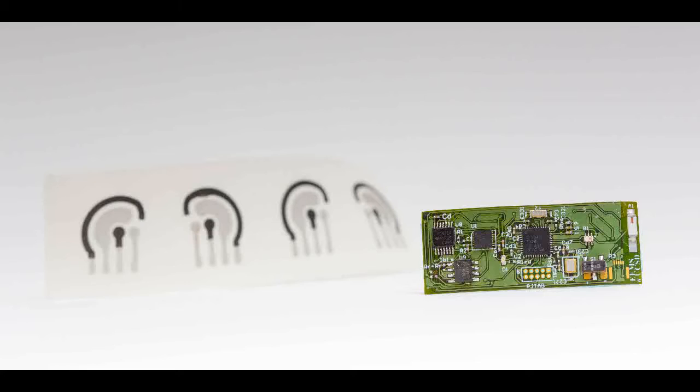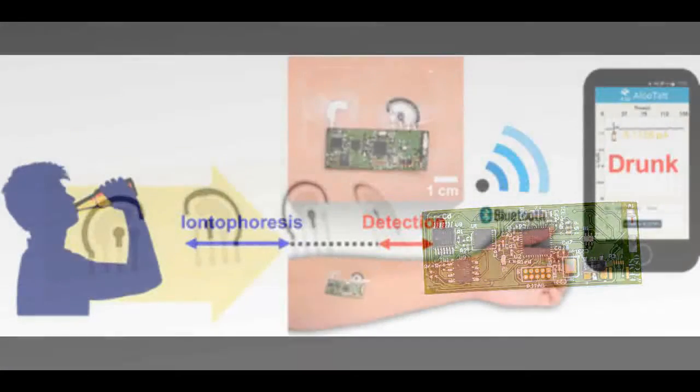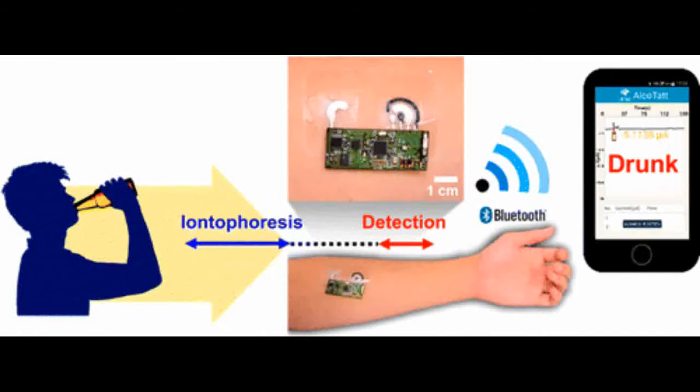The device consists of a temporary tattoo, which sticks to the skin, induces sweat and electrochemically detects the alcohol level, and a portable flexible electronic circuit board, which is connected to the tattoo by a magnet and can communicate the information to a mobile device via Bluetooth.